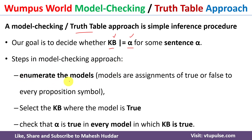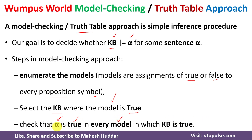Following are the steps in the model checking approach. In the first step, we enumerate the models — we assign true or false to every proposition symbol in the given sentence. Once we do that, we extract the models where the knowledge base is true. Then we check whether alpha, the query or sentence, is true in every model where the knowledge base is true. If alpha is true in every such model, then the knowledge base logically entails alpha, meaning alpha is a valid statement.